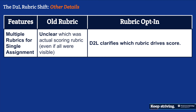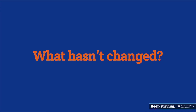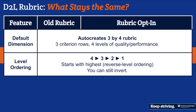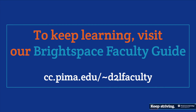For the rare use case of multiple rubrics for a single assignment, D2L now clarifies which rubric is driving the score. The icons within 'Grade All' are also consolidated. As for what hasn't changed: it still gives you a three-by-four rubric, still uses a four-three-two-one level ordering starting with the highest, and still locks the rubric once you start grading with it — a safety feature.